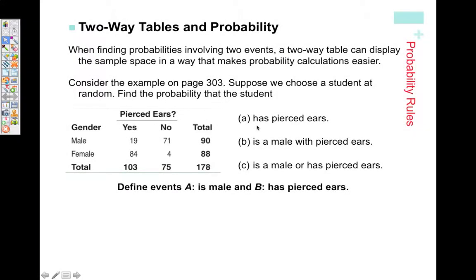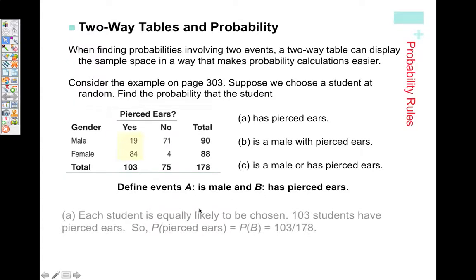Find the probability that a student has pierced ears, that they are male with pierced ears, or find the probability that a student is male or has pierced ears. We're going to call event A being male and event B being pierced ears. For part A, probability of pierced ears would be probability of B, that would be 103 over 178.